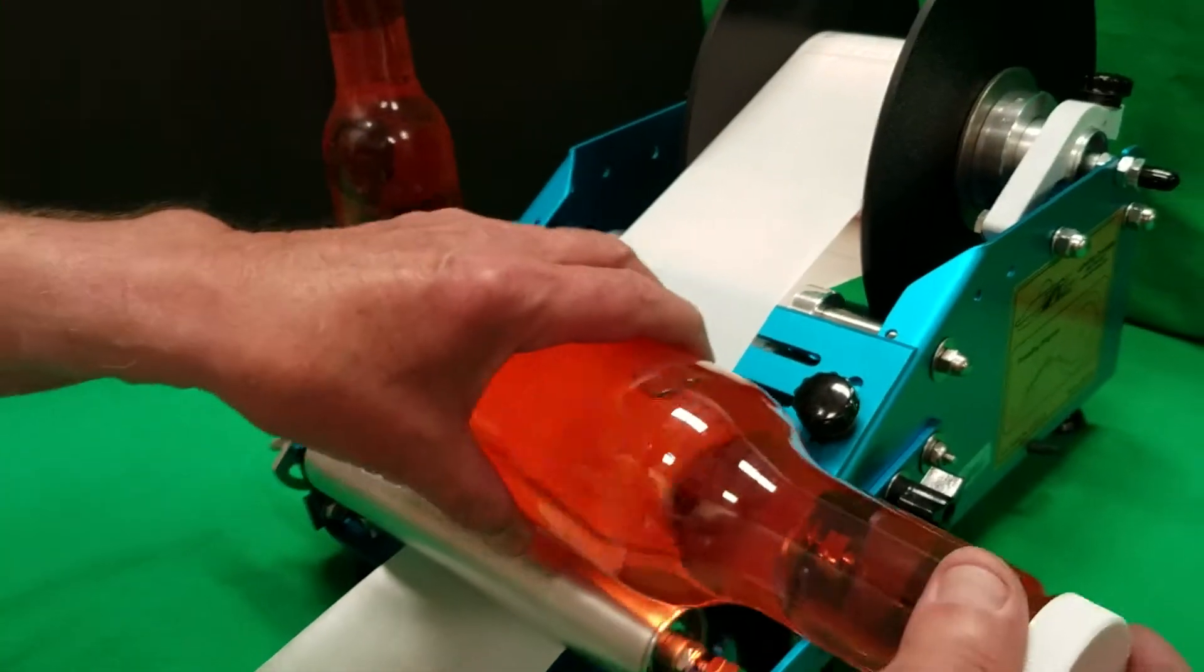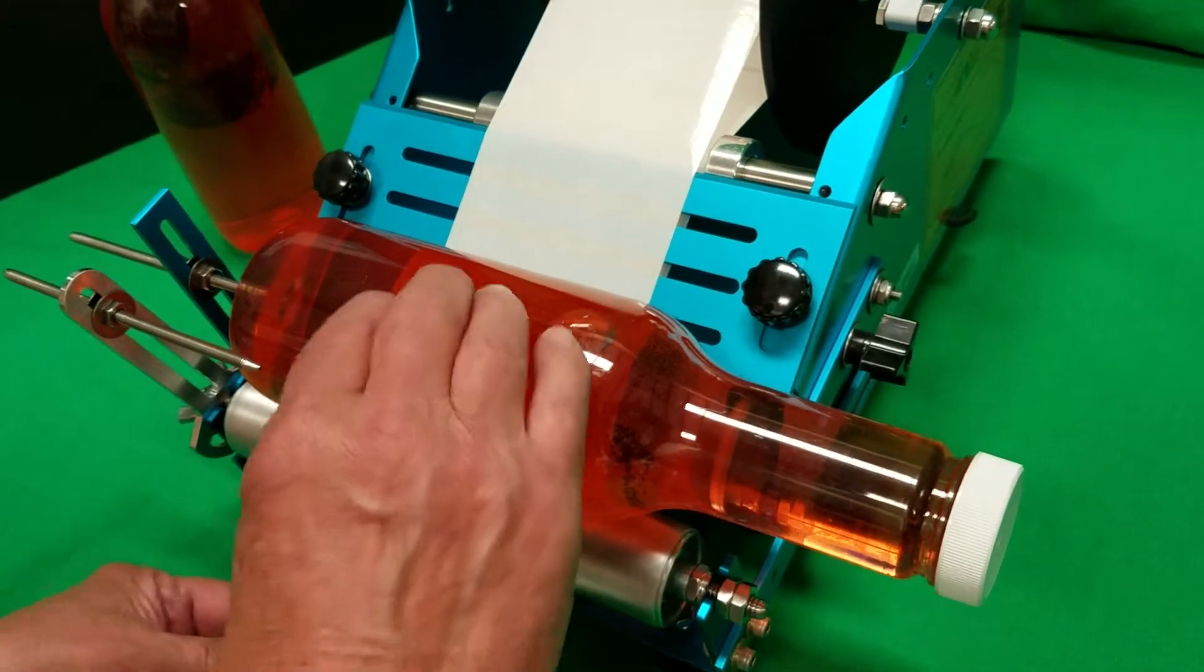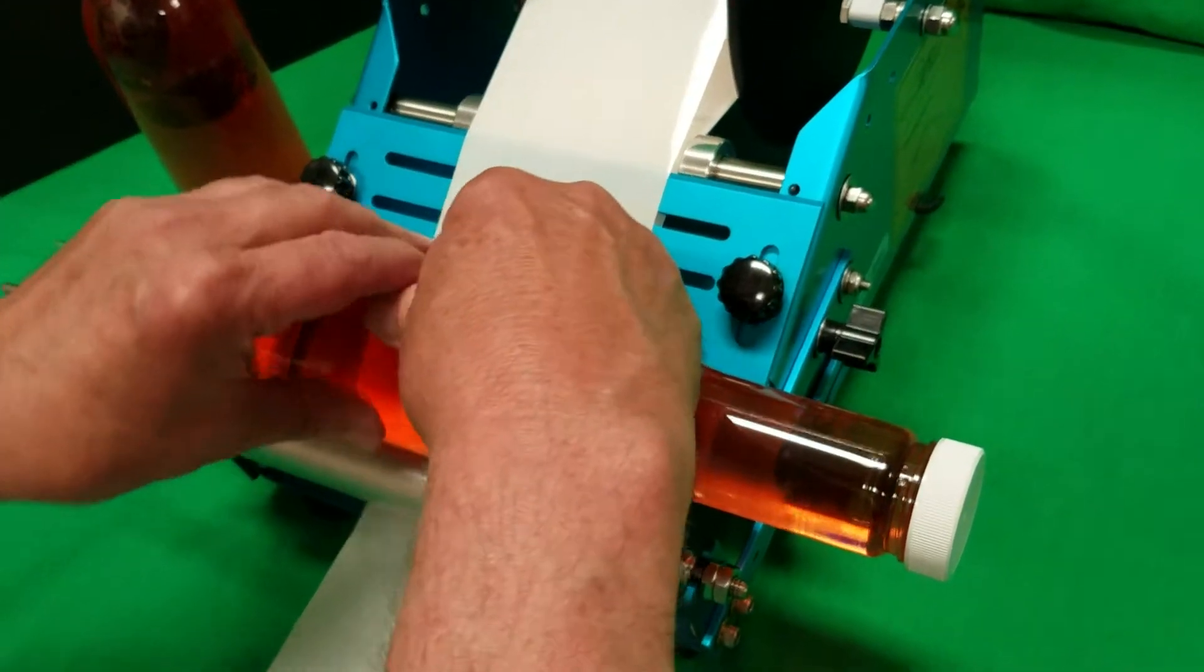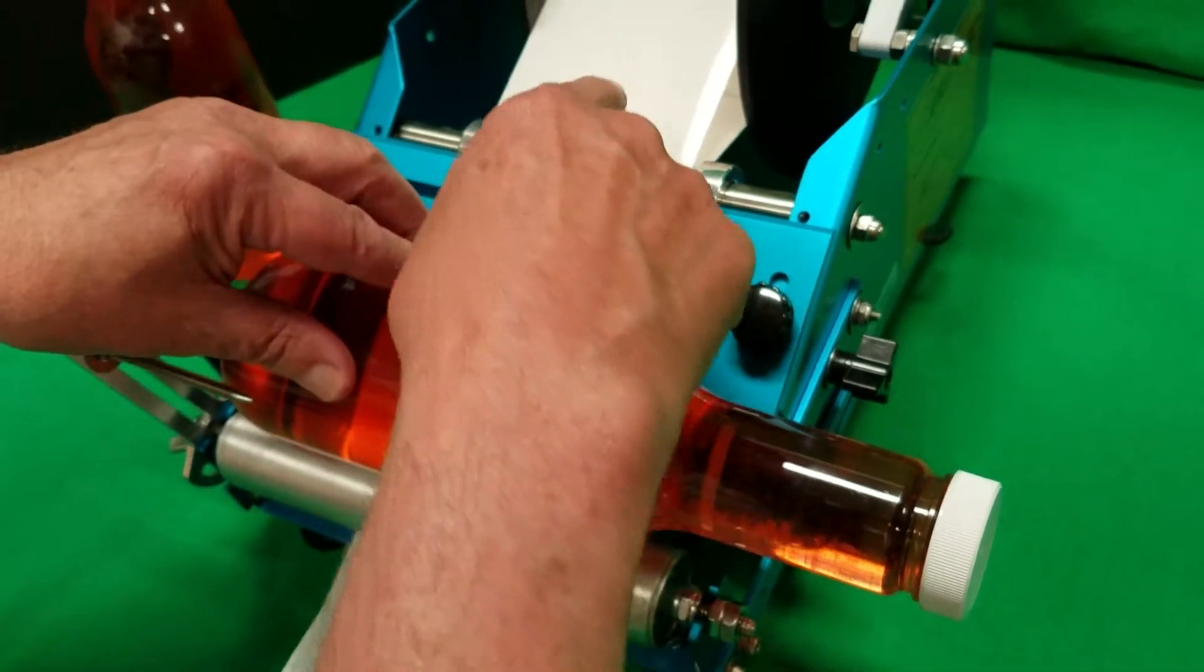So what we do is we put the bottle in the machine and we apply the front label. When you're done applying the front label, you'll see the machine stops abruptly.